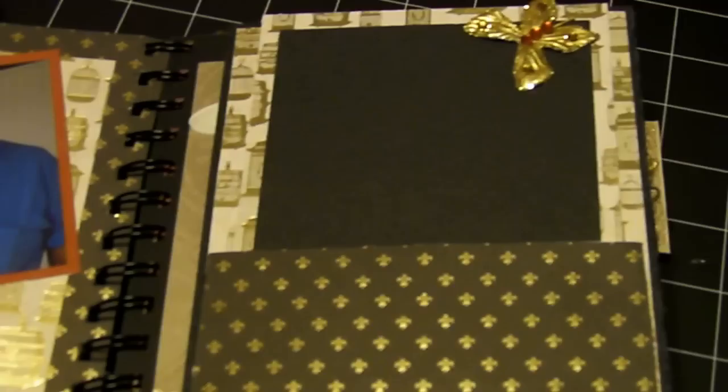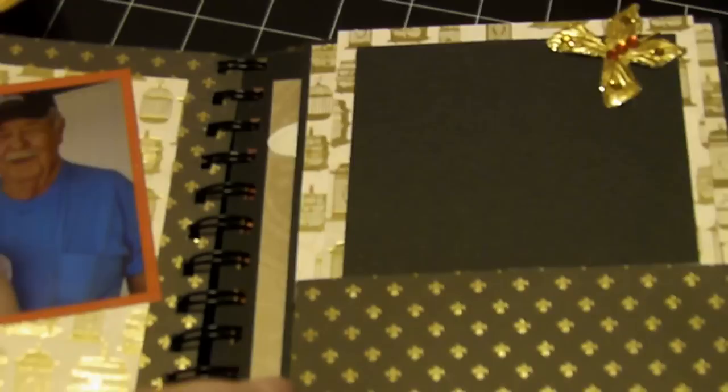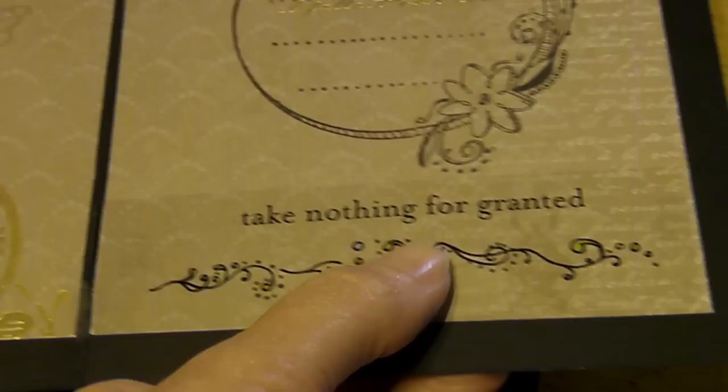The way I did this one is I just offset the cut here with some thinner chipboard, and that way she can open it up. There's some journaling spots, a place for her pictures, and also I put a transparency strip here. This one says take nothing for granted, and I think she'll enjoy decorating this book.